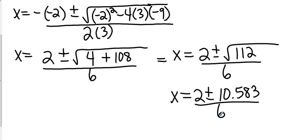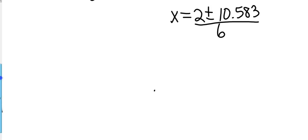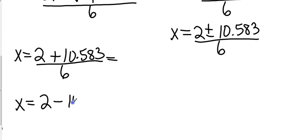Now I need to set up my two equations. I have 2 plus 10.583 divided by 6, and I also have 2 minus 10.583 divided by 6. Let me clear my calculator. 2 plus 10.583, and then I'm going to divide that by 6. They're going to ask you to round to the nearest tenth. This comes out to be 2.09, which is going to round to 2.1.